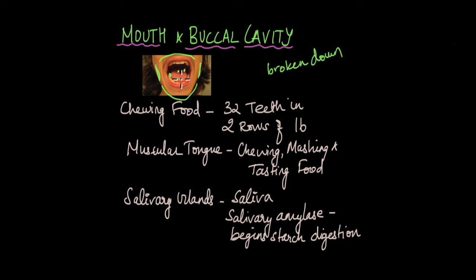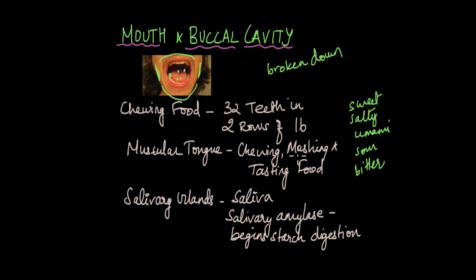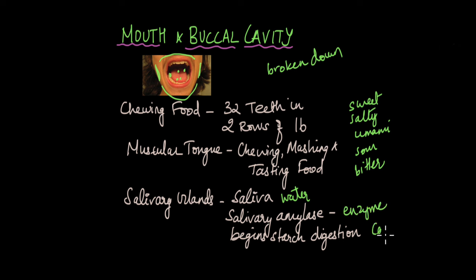Your tongue has taste buds that help you taste the food and you can figure out tastes like sweet, salty, umami, sour and bitter. But why do we need to chew and mash the food? That's because of the saliva produced by the salivary glands. Saliva is mostly made up of water but it also contains a substance known as salivary amylase. The salivary amylase is an enzyme that begins the digestion of starch. Starch is a carbohydrate, so you can say that the digestion of carbohydrate begins in the mouth itself.